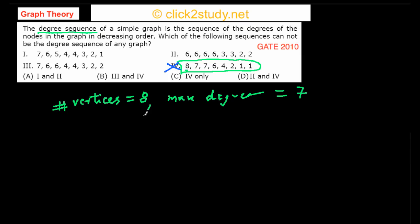We come to the second part of this video. So far we have eliminated the fourth option because the 8 was causing problems, and we didn't need anything other than simple logic — we didn't need Havel-Hakimi theorem to eliminate that option. We know it cannot be correct because 4 has to be in any valid option: the maximum degree with 8 vertices is 7, so a degree of 8 is impossible.